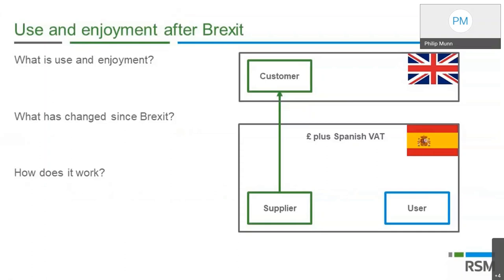The use and enjoyment rules affect the place of supply — essentially where VAT should be accounted for. By default, many businesses familiar with international trade of services will know that for B2B sales, services are often treated as outside the scope of the supplier's VAT and subject to a reverse charge wherever the customer belongs. For B2C supplies, VAT is often due wherever the supplier belongs. However, this is VAT and there are always exceptions — the use and enjoyment rules are one such exception.